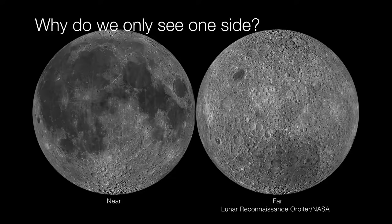So the question now is why do we only see one side? Well, we will eventually learn that this all has to do with something called tidal forces. But practically, what does it mean to only see just one side of the moon?